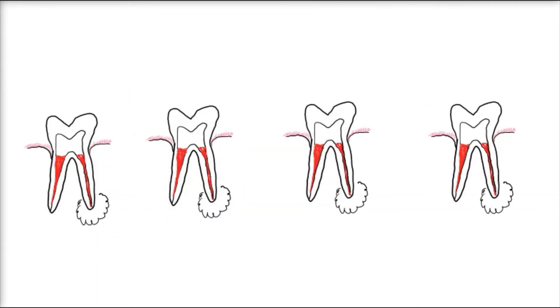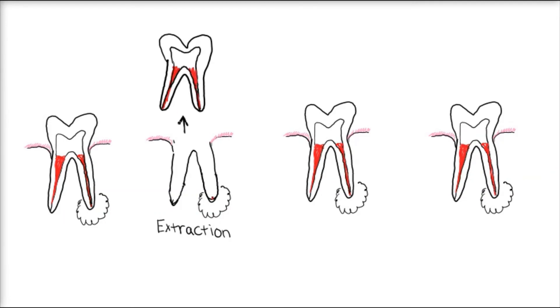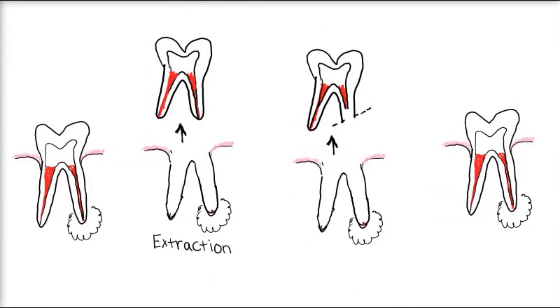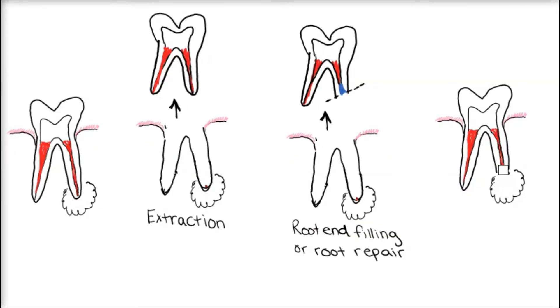Here I'll draw our endodontically treated tooth with persistent periradicular pathology. First, this tooth is going to be extracted and removed from its socket. Next, the root end in question will be filled or repaired. Then the tooth is replanted in its socket and possibly stabilized.